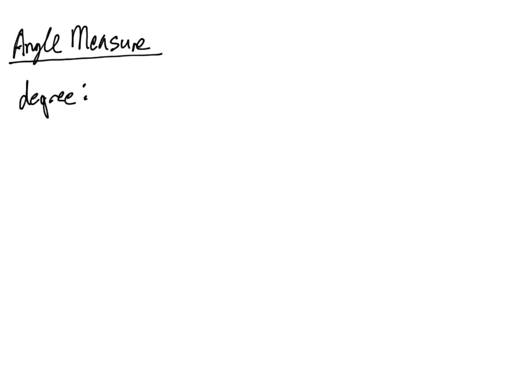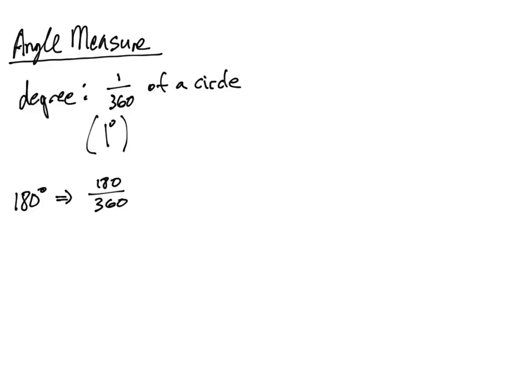How do we actually measure an angle? There are two main ways. One way is probably what you're most familiar with — a degree measurement. Technically, a degree is 1/360th of a circle. So if we're talking about 180 degrees, that is 180 out of 360 possibilities, which is one half of a circle. We'll be working with degrees throughout the class.